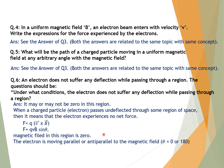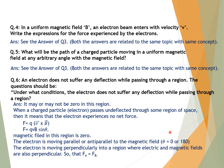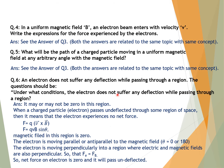Alternatively, the electron may be moving perpendicularly into a region where electric and magnetic fields are also perpendicular to each other. In this case, F_electric = F_magnetic, so the net force on the electron is zero and it passes undeflected. When electric and magnetic forces balance each other, the net force is zero and the electron passes undeflected.